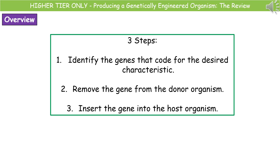For those doing higher tier combined or higher tier GCSE biology, you need to know a little bit more about how we produce genetically engineered organisms. Basically there are three key steps: first, identify the genes that code for the desired characteristic; second, remove the gene from the donor organism; and third, insert that gene into the host organism.